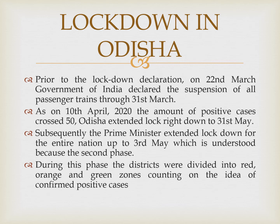The main reason behind the economic loss is the lockdown. Prior to the lockdown declaration on 22nd March, the Government of India had declared the suspension of all passenger trains through 31st March. As of 10th April 2020, the number of positive cases crossed 50. Odisha extended its lockdown through 31st May. Subsequently, the Prime Minister extended the national lockdown to 3rd May — the second phase — as the initial 25-day lockdown was due to end on 14th April. During these phases, districts were divided into red, orange, and green zones depending on positive case counts.